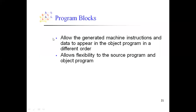We will now see the fourth machine independent feature: program blocks. In the previous assembly program, the way instructions are written in the source program, the object program is also written in the same order. But program blocks gives flexibility to the user — you need not write the object program in the same order as the source program. Instructions that refer to each other are placed in one single block, and all data areas are placed in a separate block.